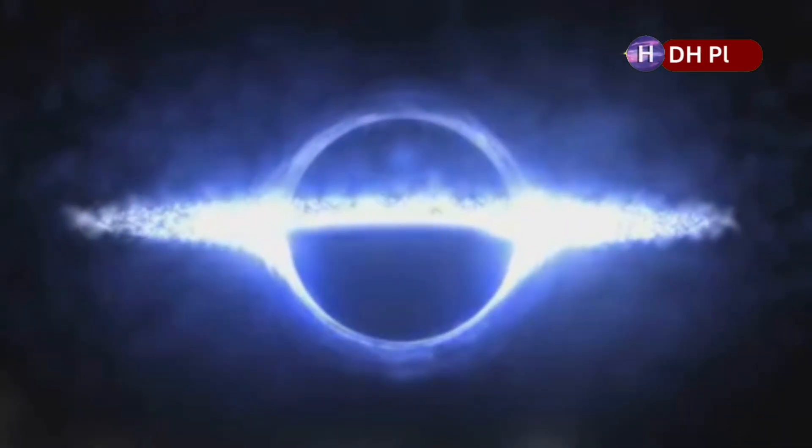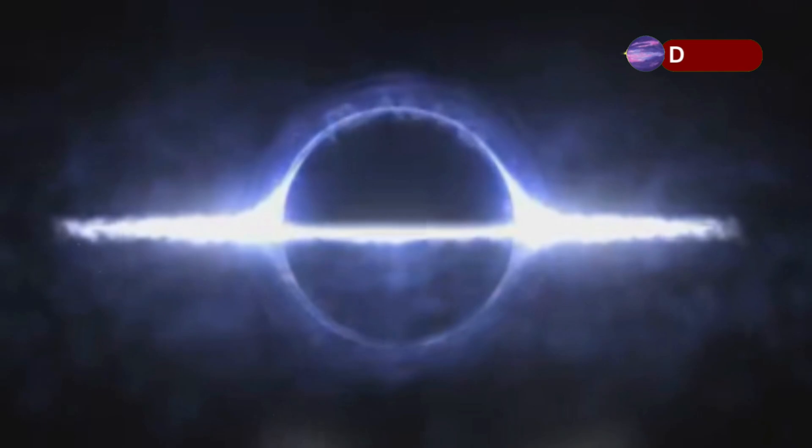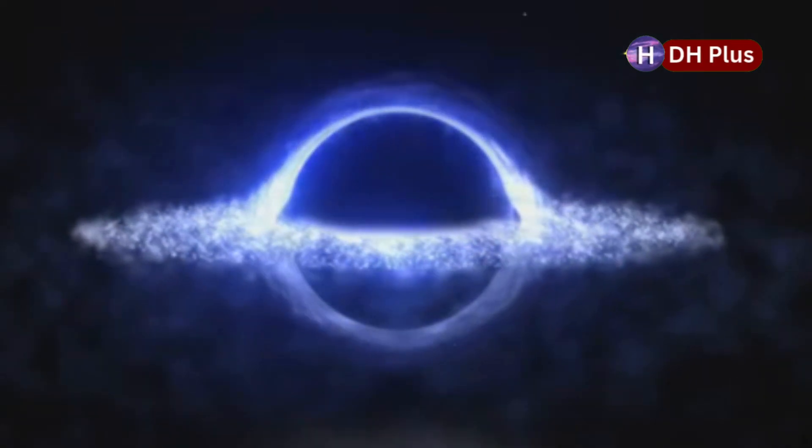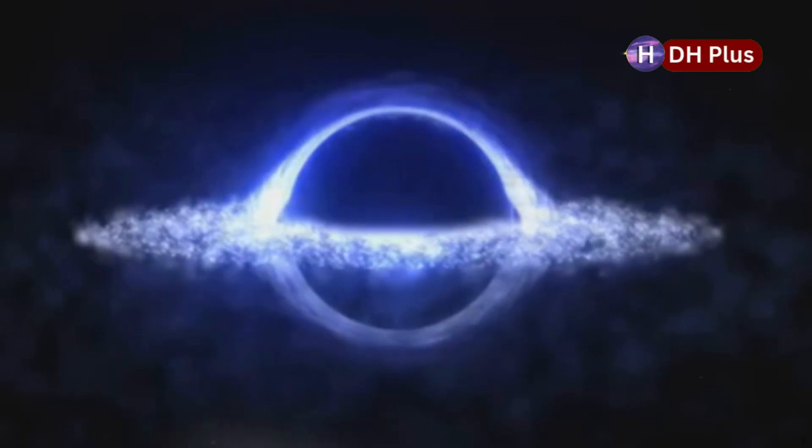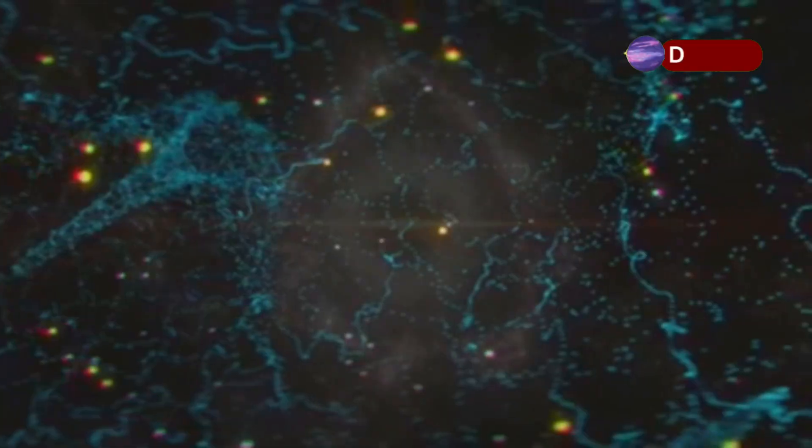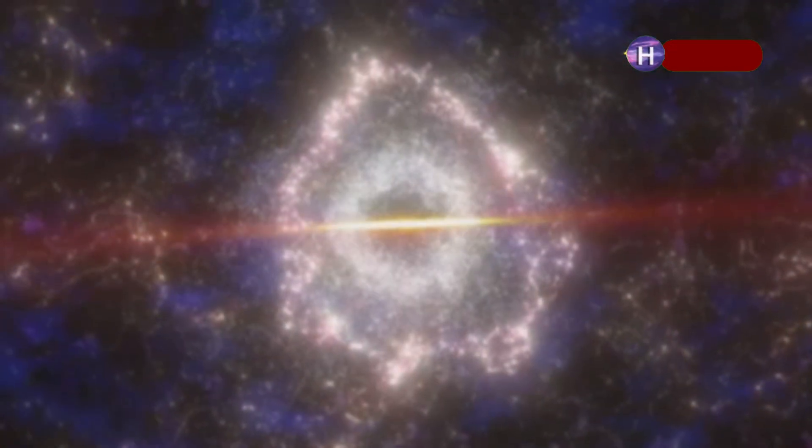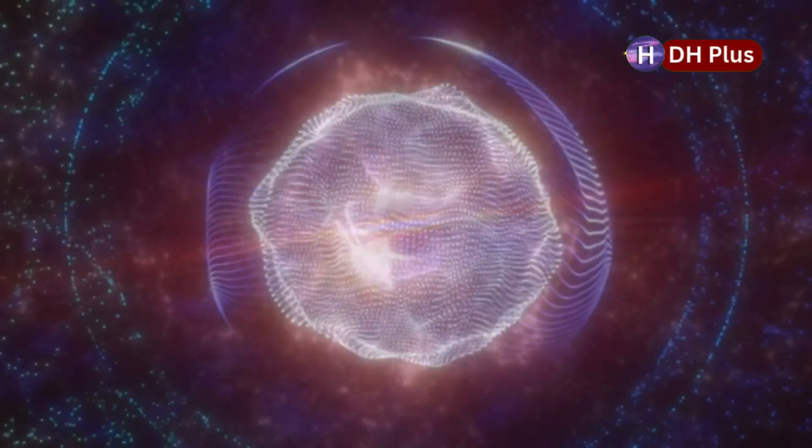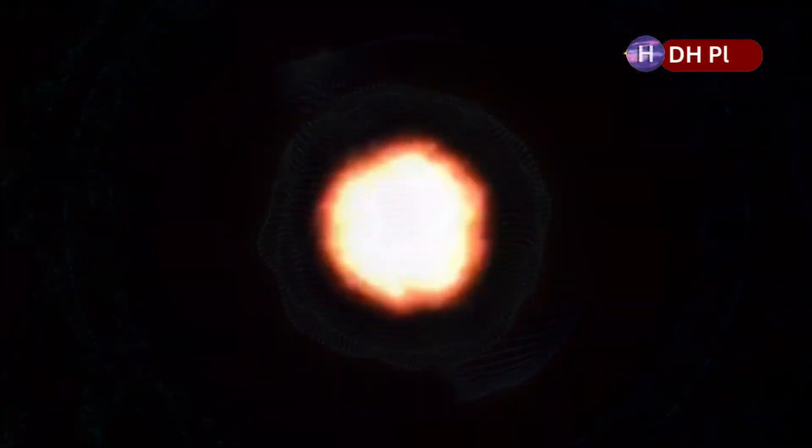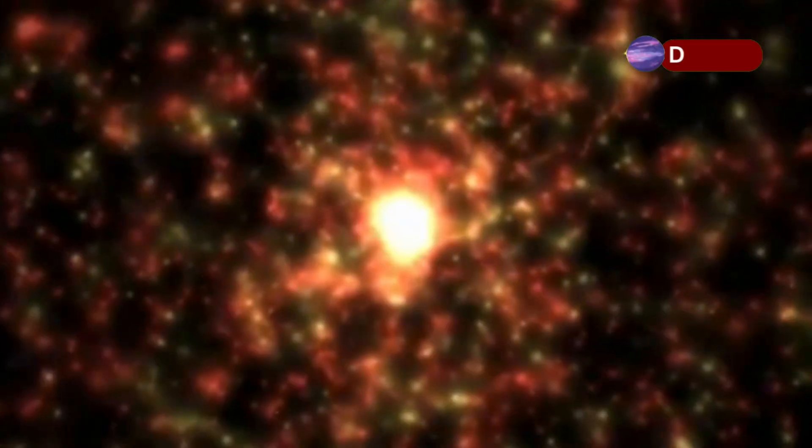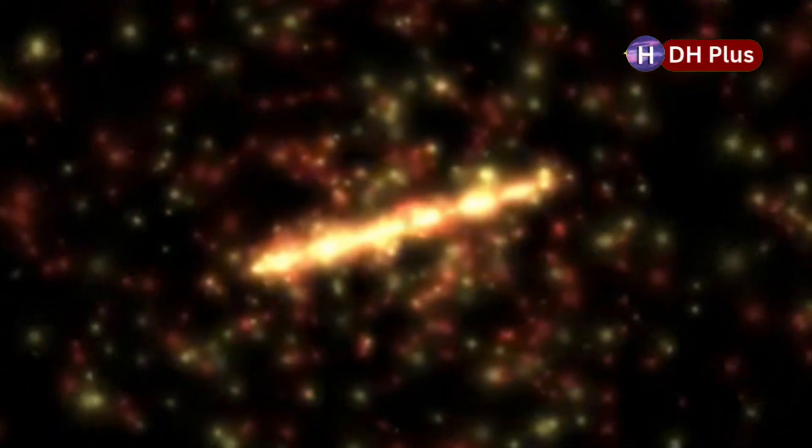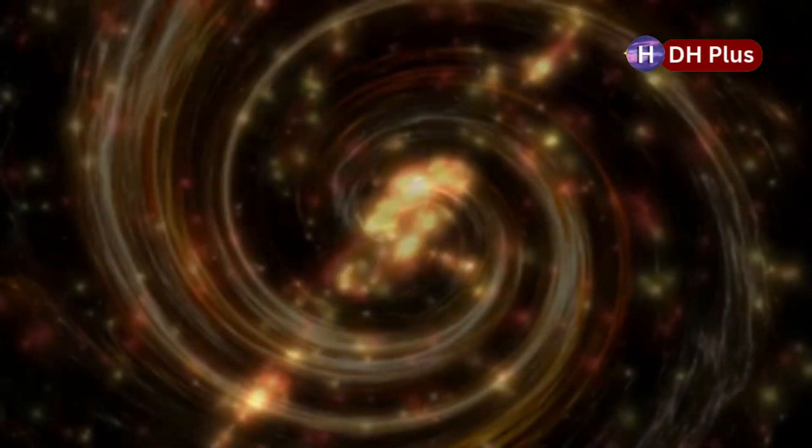This idea doesn't just explain how our universe began, it opens up the possibility that every black hole in our cosmos might be the seed of a new universe. A kind of cosmic reproduction. It might also help explain why the fundamental constants of physics, the numbers that govern everything from the strength of gravity to how atoms interact, seem perfectly tuned for life. Universes born inside black holes that don't have the right conditions might collapse quickly, but the ones that do, they persist, they evolve, they multiply.